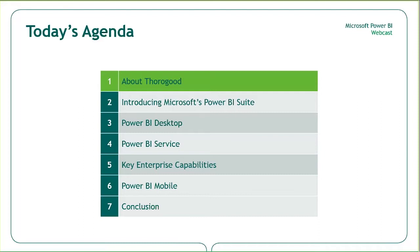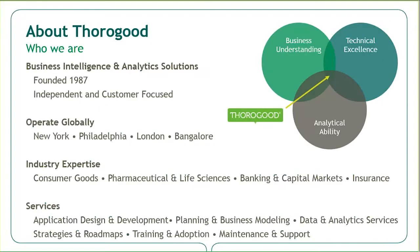I saw the registration list for today — it looks like there are some familiar faces out there, so thank you guys for joining. For those of you who don't know Thorogood, we are an independent global professional services firm specializing in business intelligence and analytics solutions. We've been around for about 28 years and have a keen focus on our customers. We operate globally with offices in the U.S. in New York and Philadelphia, in the U.K. in London, and in India in Bangalore. We typically operate across the consumer goods, pharmaceutical, life sciences, and financial services sectors.